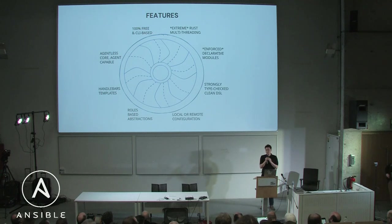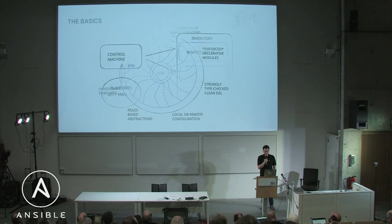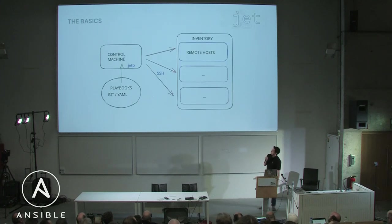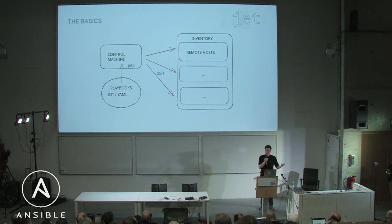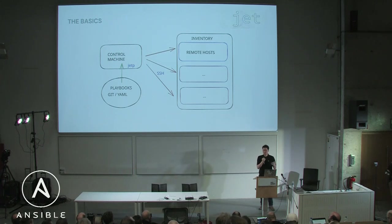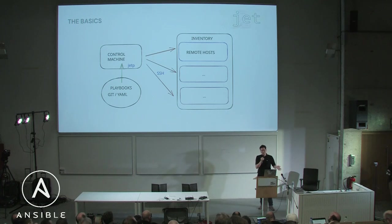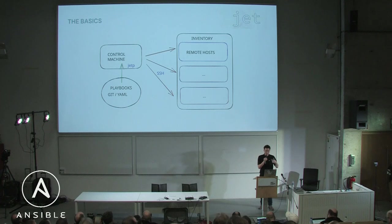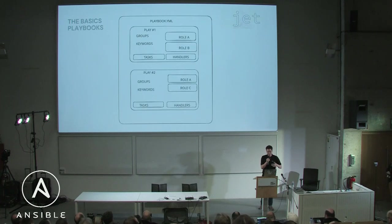Many will look very familiar to you. Of course, you start with the playbook. You have it in your Git and you write it in YAML — JET uses a specific dialect of YAML — and then you have your control machine which configures the hosts defined in your inventory.